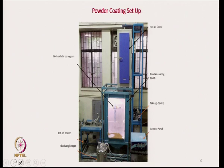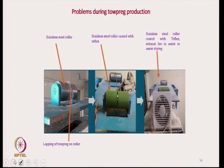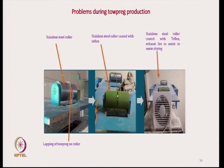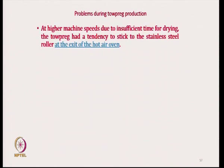This is the whole setup as already seen. A small problem we faced: once the tow preg coming out of the oven is sticky, it gets stuck to the roller — roller lapping took place. To avoid that, we used Teflon coating and an immediate cooling system. Teflon coating and an exhaust fan were used for drying at the exit of the hot air oven to avoid roller lapping.